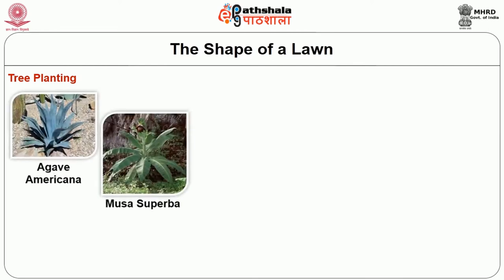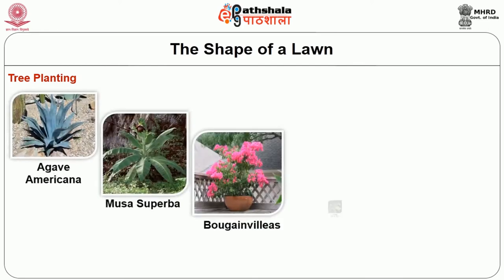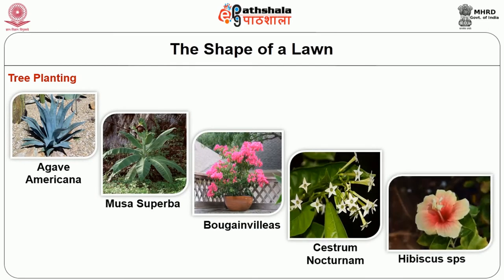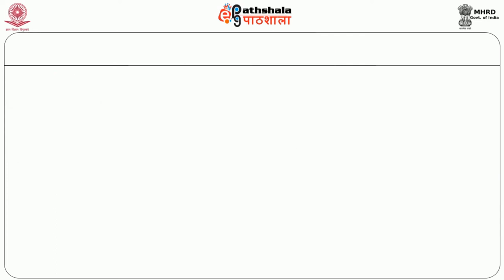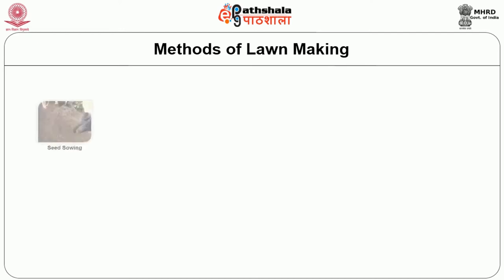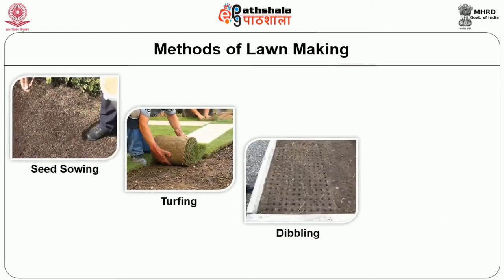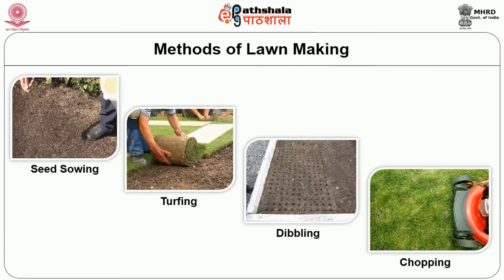Agave americana, Musa superba, Bougainvillea, Cestrum nocturnum, Hibiscus species etc. are common shrubs used to break monotony of lawns. Then we will discuss about the methods of lawn making. Common methods of lawn making used in Indian conditions are seed sowing, turfing, dippling, and chopping.